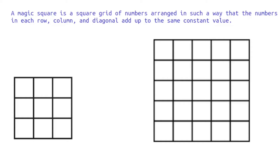A magic square is a square grid of numbers arranged in such a way that the numbers in each row, column, and diagonal add up to the same constant value. For a square of size n by n, the numbers used are from 1 to n squared, and each number can be used only once.